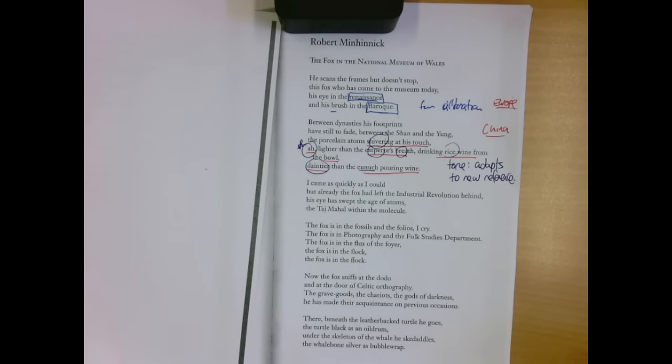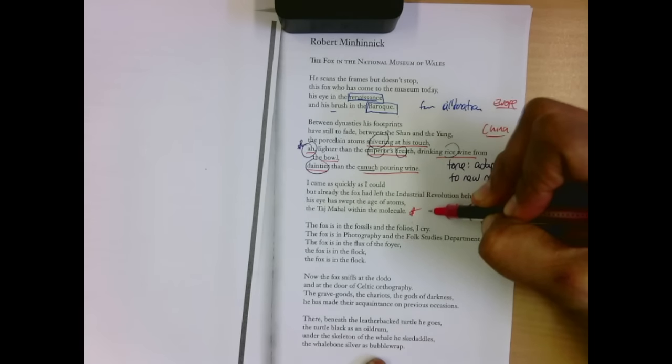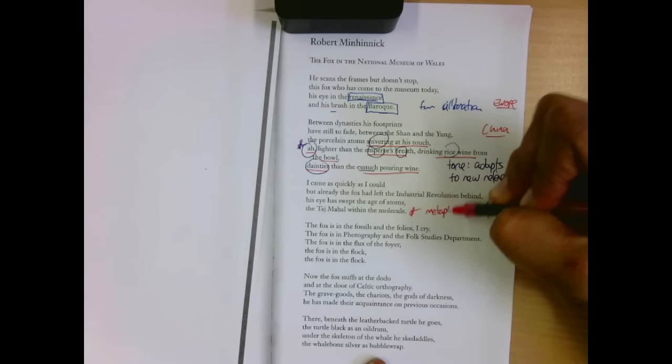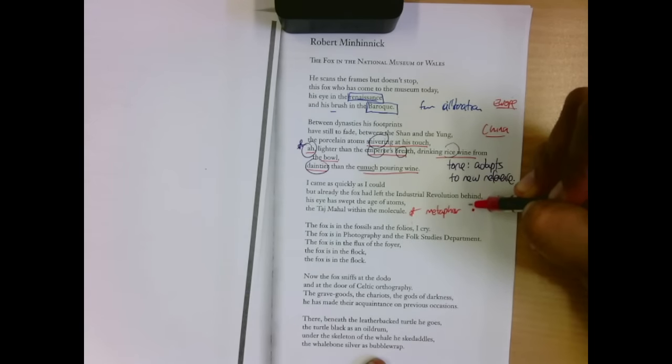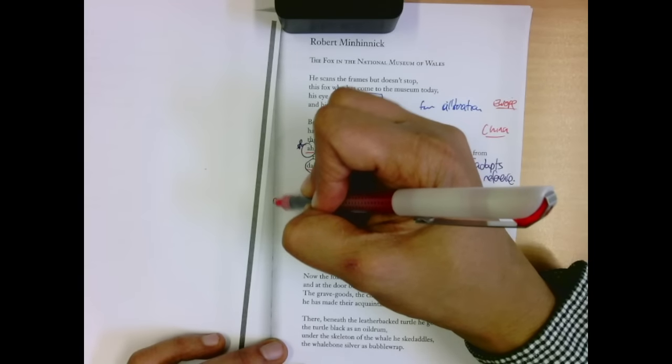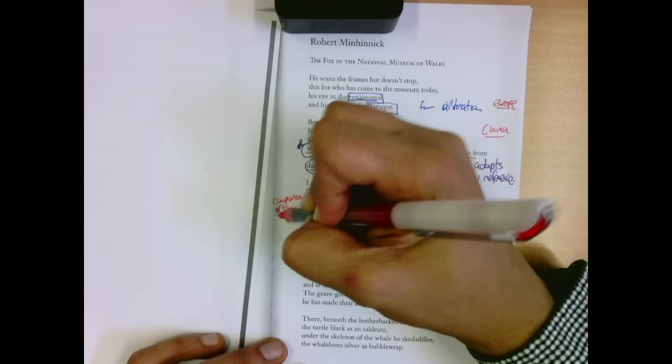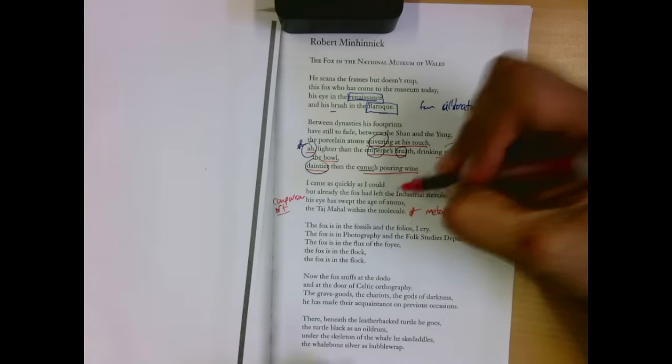I came as quickly as I could, but already the fox has left the Industrial Revolution behind. His eye has swept the age of atoms, the Taj Mahal within the molecule. So, what a wonderful metaphor for the construction of the atom. There's my horrible drawing of it. What's in the center is the Taj Mahal. His comparisons for things are with art. Art becomes its own referent.